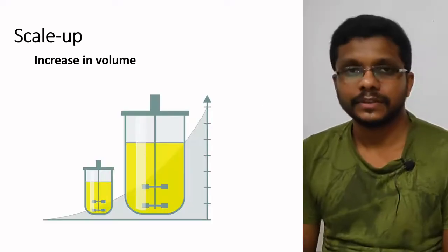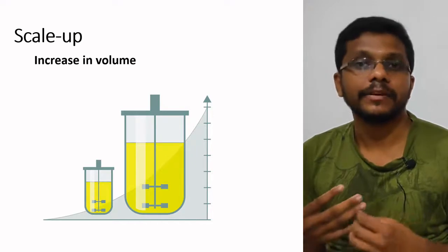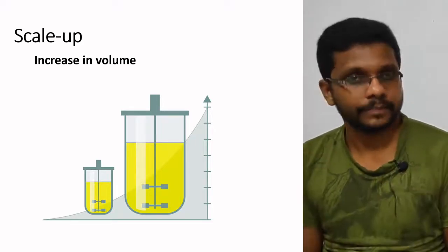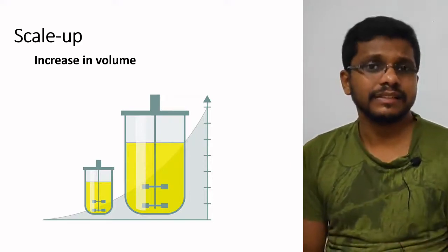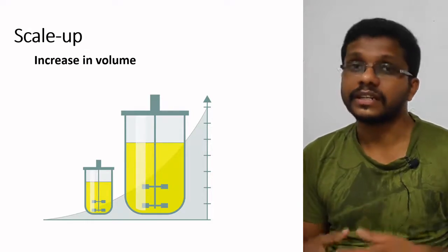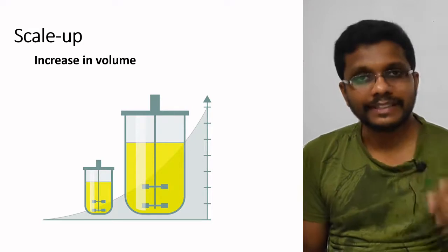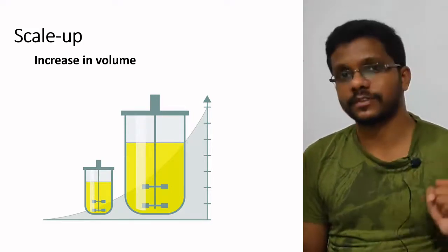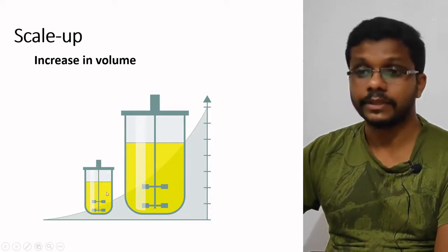In this video I am going to talk about scale-up of fermentation. Scale-up is basically an increase in volume. Most fermentations are discovered, isolated, and optimized in a small laboratory-scale fermenter, with a volume from 1 liter to a maximum of 100 liters. Once we find that the fermentation is economical and can be used commercially, we need to increase the volume of production from 10 liters to maybe 1 lakh or 10 lakh liters.